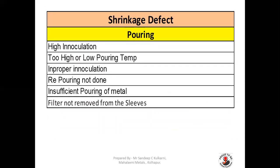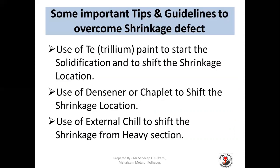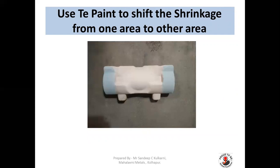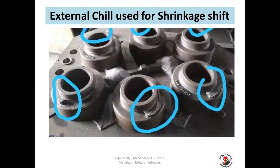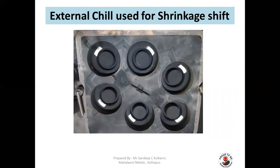Now we are going to see some important tips and guidelines to overcome shrinkage defect. You can use zircon paint to start solidification early and shift the shrinkage location. Use of densers or chaplets to shift the shrinkage location is another way. Use of external chills to shift shrinkage from a heavy section. You can see pictures here of zircon paint being used to shift shrinkage from one area to another, and external chills applied on the casting surface.